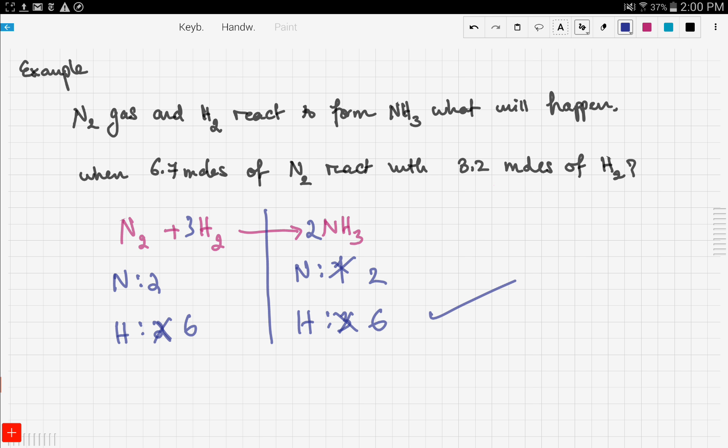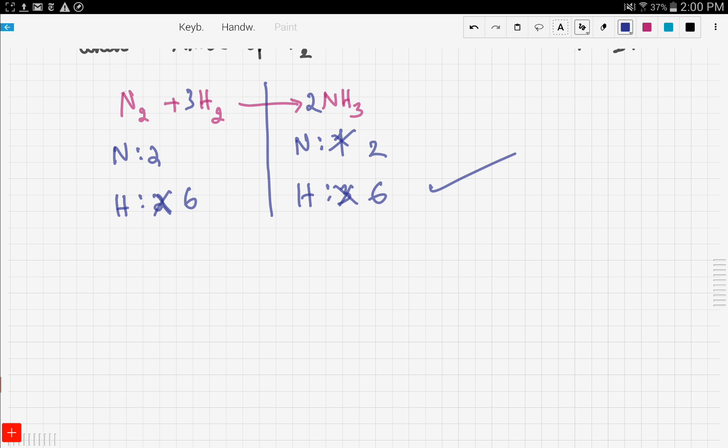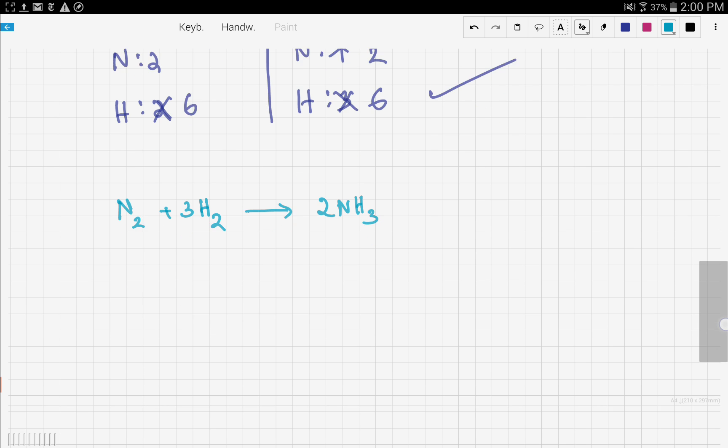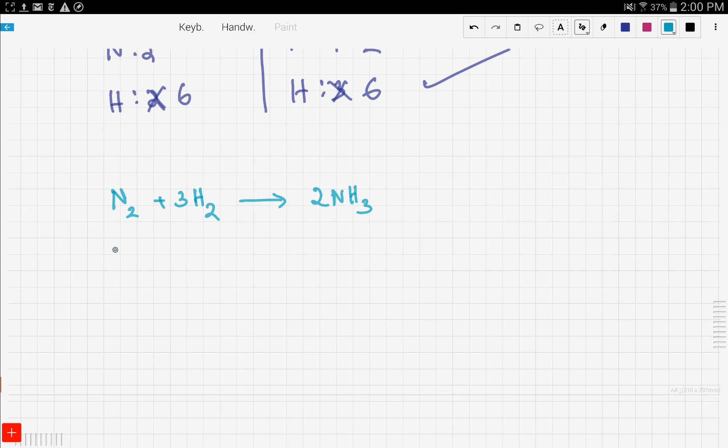If you're having trouble to balance this equation, you need to go back to my video on balancing chemical reactions. Now we have our reaction, so let's write it over here, nice, neat and clean. Nitrogen reacting with hydrogen to give ammonia. Now he asks you, what if you have 6.7 moles of nitrogen and 3.2 moles of hydrogen?